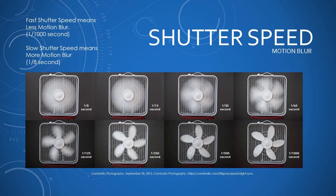The next thing is shutter speed, which is important for motion and motion blur. The images of the fans show different shutter speeds and how they affect your image. Fast shutter speed means less motion blur — for example one over one thousand, meaning one thousandth of a second. Slow shutter speed means more motion blur; one eighth of a second means the camera takes longer to take the picture — you'll actually hear the difference when you shoot, and changing the shutter speed gives you different effects depending on what you want for motion.